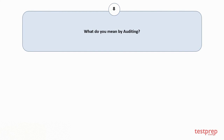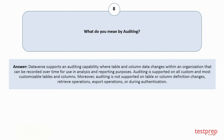Question number 8: What do you mean by auditing? Dataverse supports an auditing capability where table and column data changes within an organization can be recorded over time for use in analysis and reporting purposes. Auditing is supported on all custom and most customizable tables and columns. Moreover, auditing is not supported on table or column definition changes, retrieve operations, export operations, or during authentication.